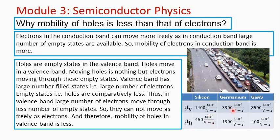For germanium, mobility of electrons is 3900 centimeter square per volt second and mobility of holes is 1900 centimeter square per volt second.